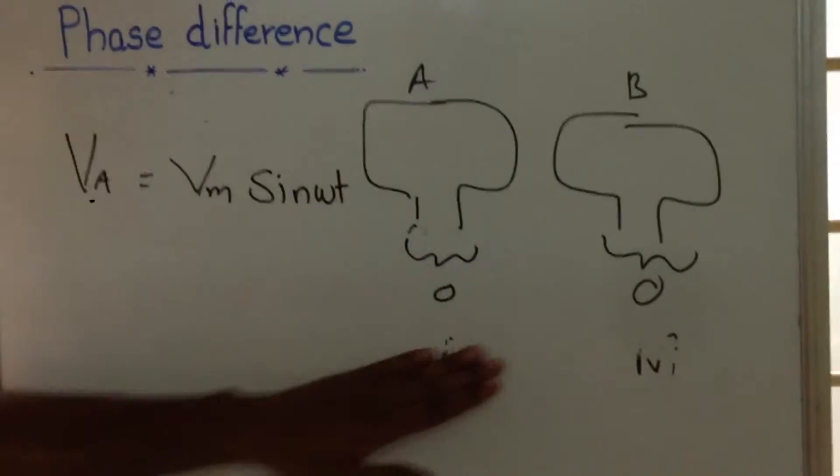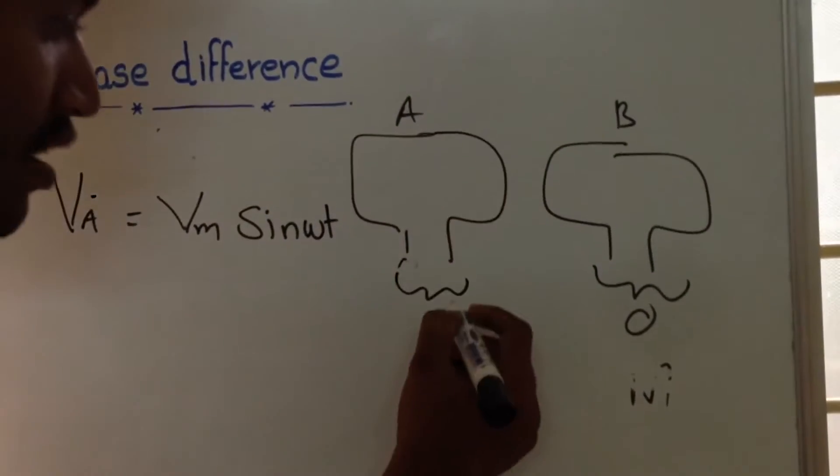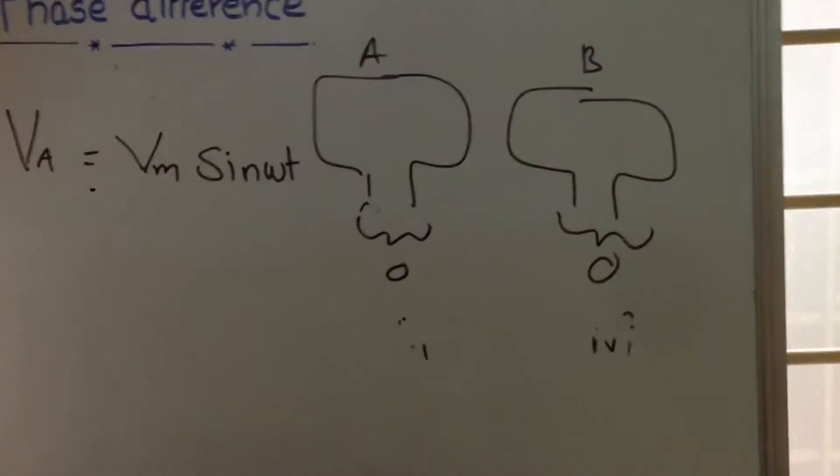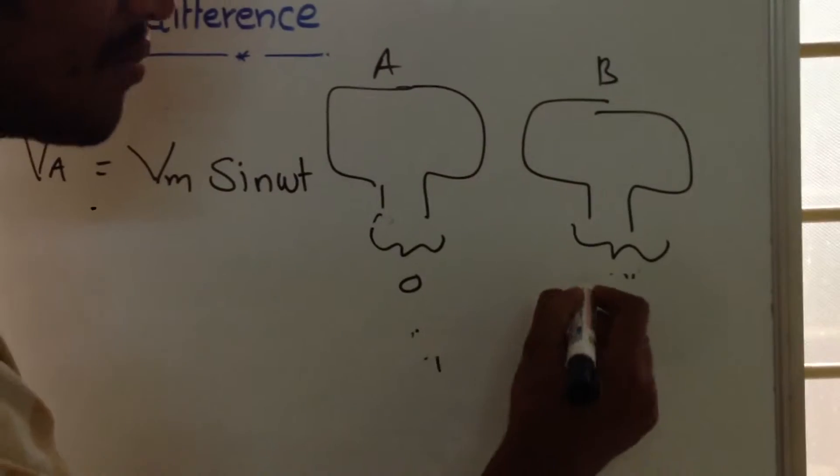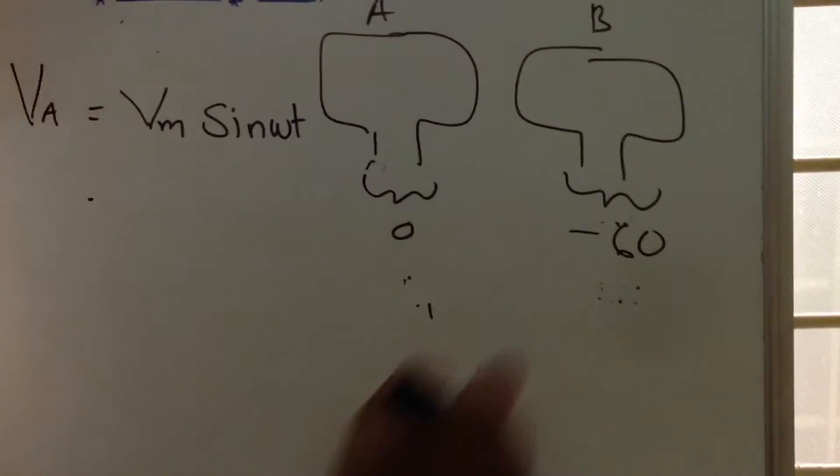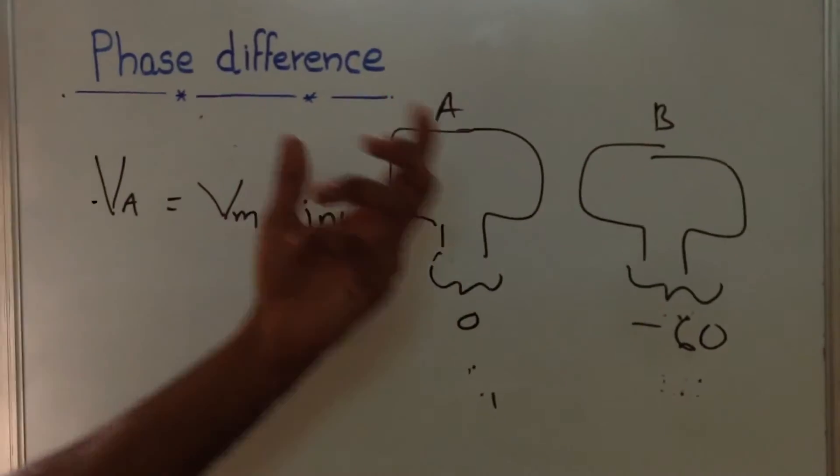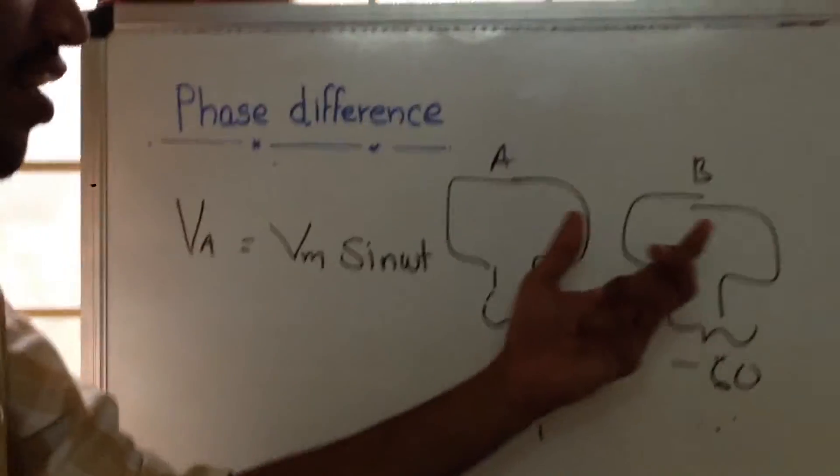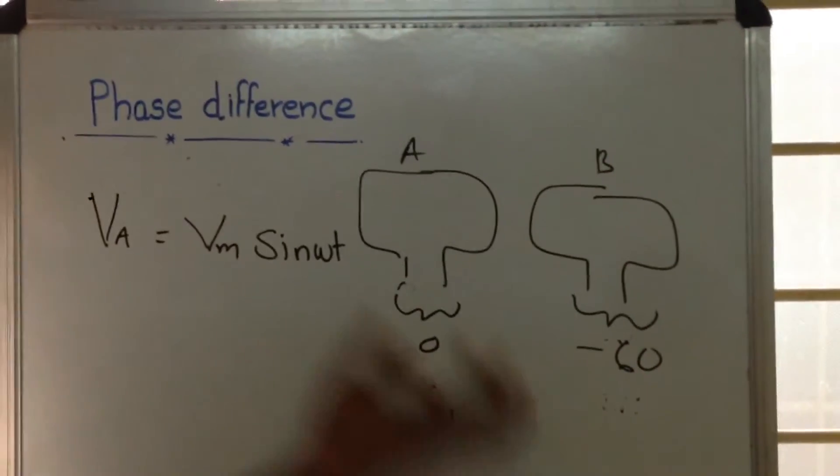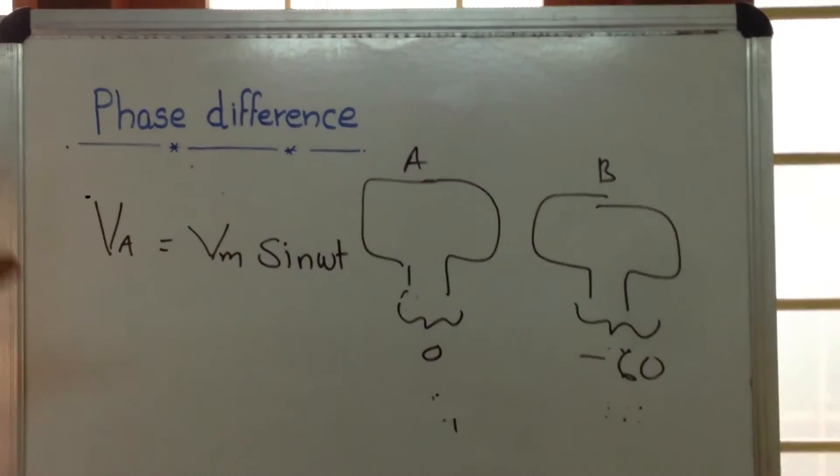Now at some time the voltage across coil A will be zero, but coil B will be some negative quantity - some negative 16, 20, like that. That means coil A leads coil B by some angle, and that angle is called the phase difference.